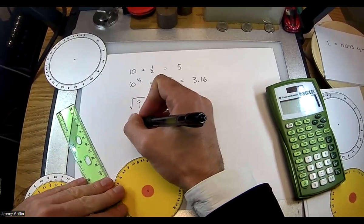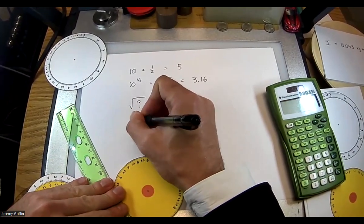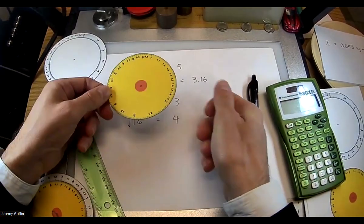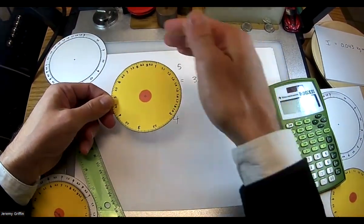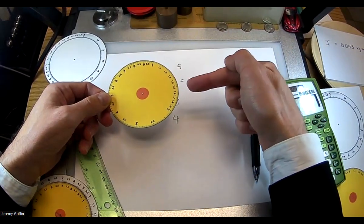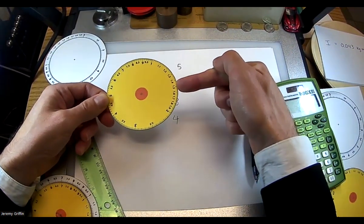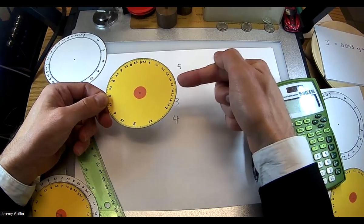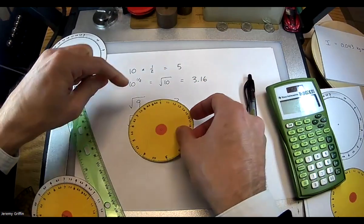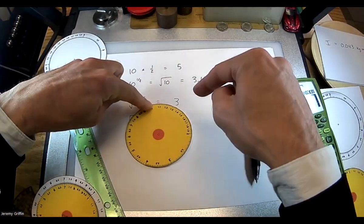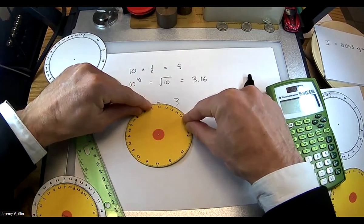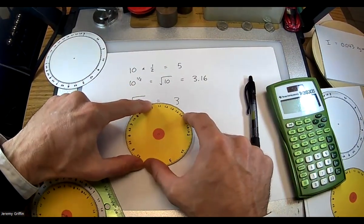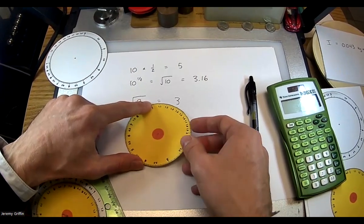What's the square root of 16? That's 4. On the circle calculator, where is 16? Look at 1.6 — because the decimal place can float, 1.6 represents 16. Here's home base at 1, here's 1.6 which I'll call 16. What's halfway in between? Exactly 4. You can see that 4 is exactly halfway between 1 and 1.6 on the circle.